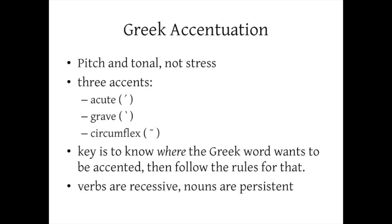Nouns, on the other hand, are persistent. Wherever the accent is in the nominative — that is the first form you see in a dictionary entry — that's where the accent wants to be. Whether it can stay there is a different question, but just remember: verbs want to be accented on the third from the end, and nouns, wherever they're accented at the beginning, that's where they want their accents to remain. We'll go over all this in detail.